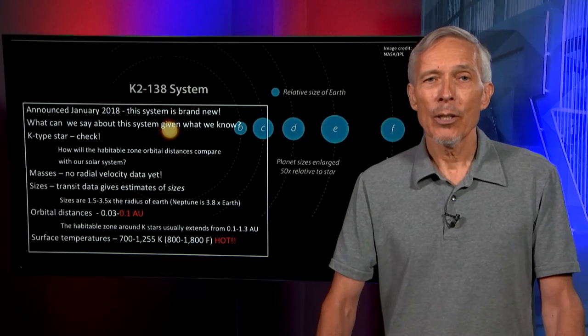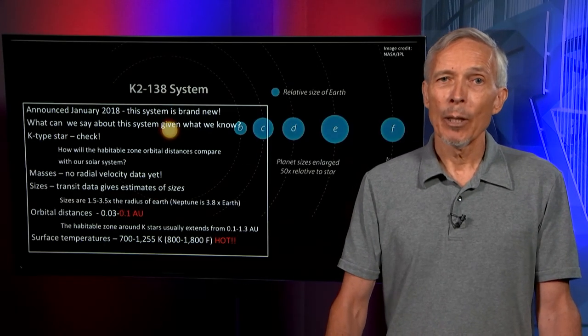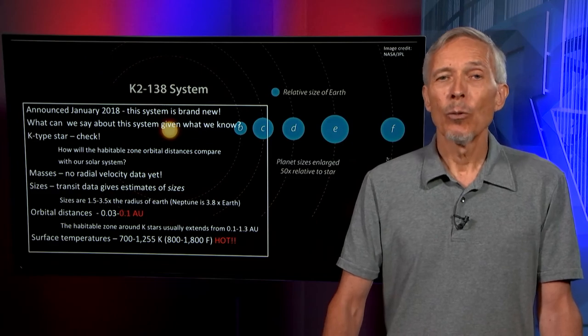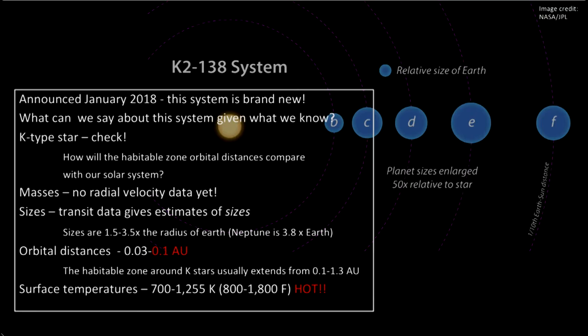Let's look at another system more recently discovered in 2018, the K2-138 system. This was found by the Kepler satellite in its twilight mission, called K2, when it had lost some of its pointing capability and started doing broader swath surveys for exoplanets. What can we say about this system so far? It's a K-type star.